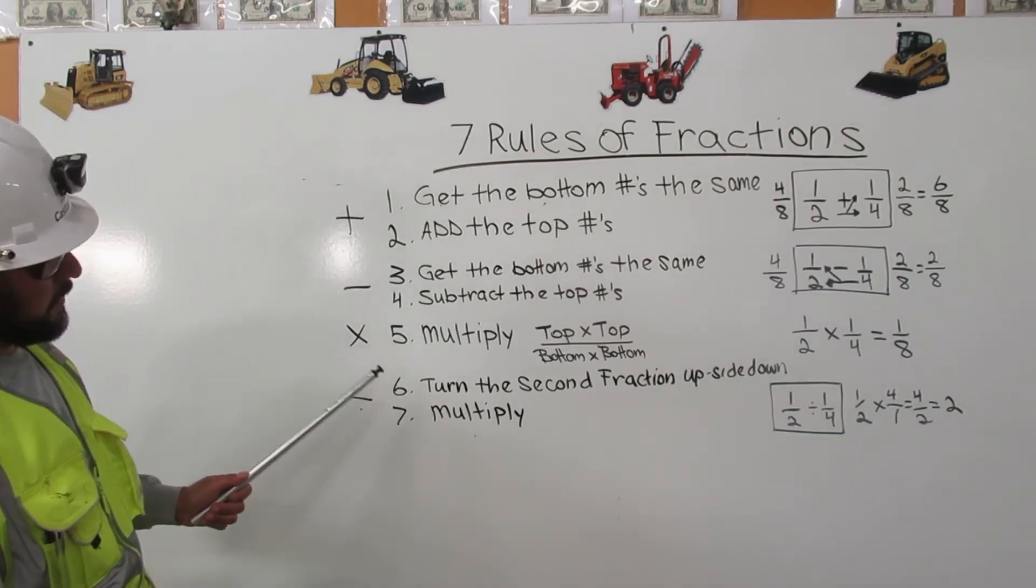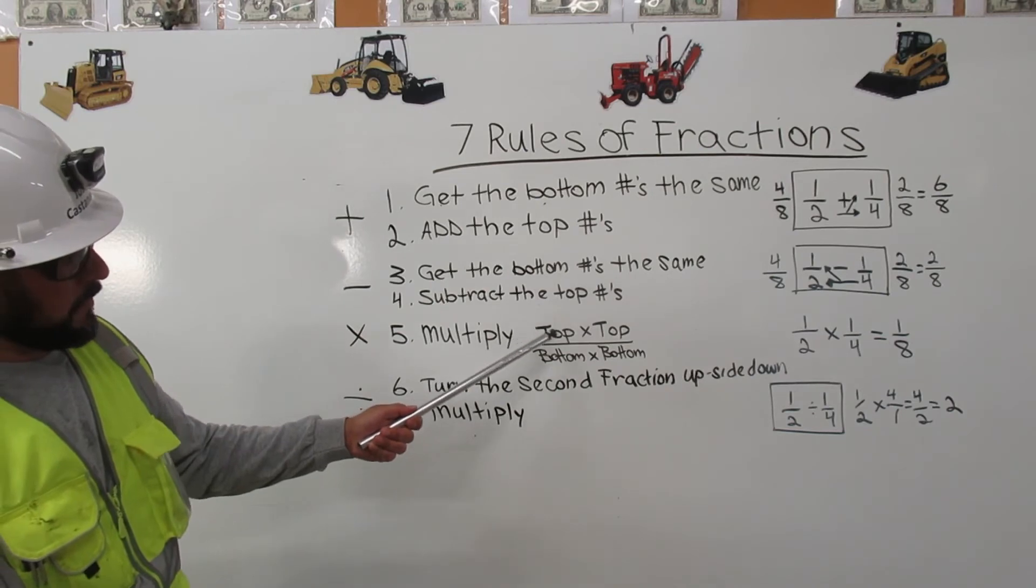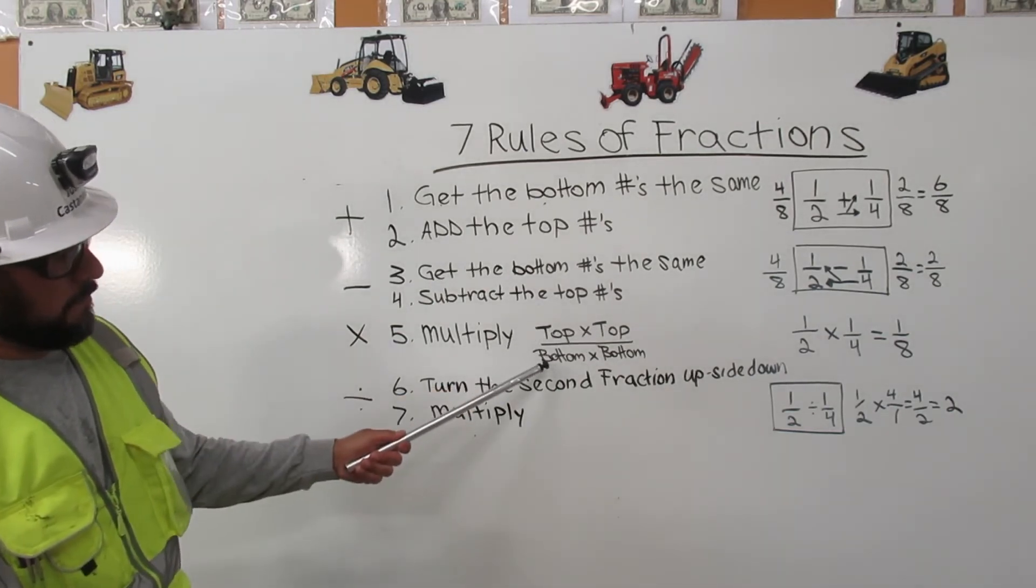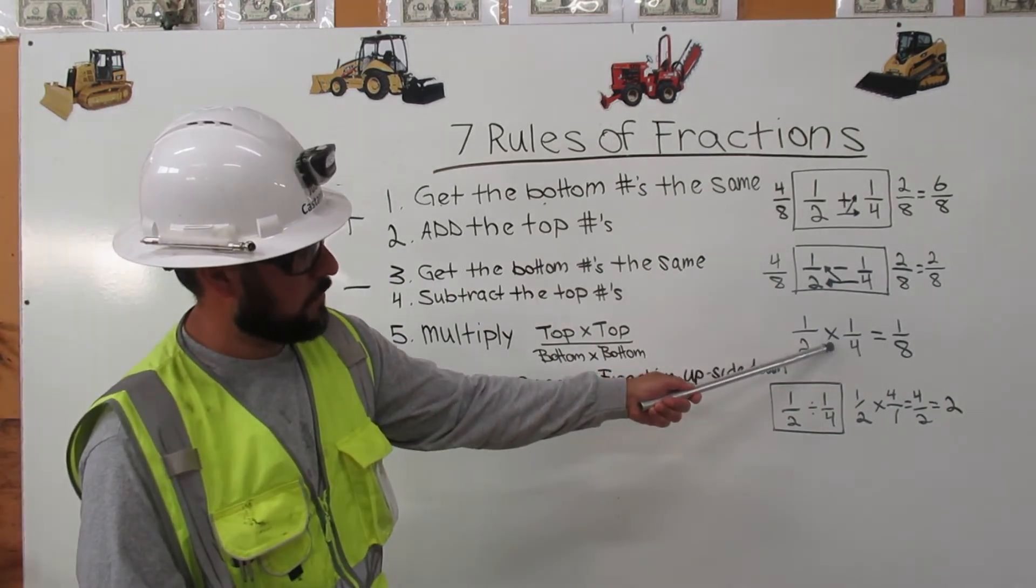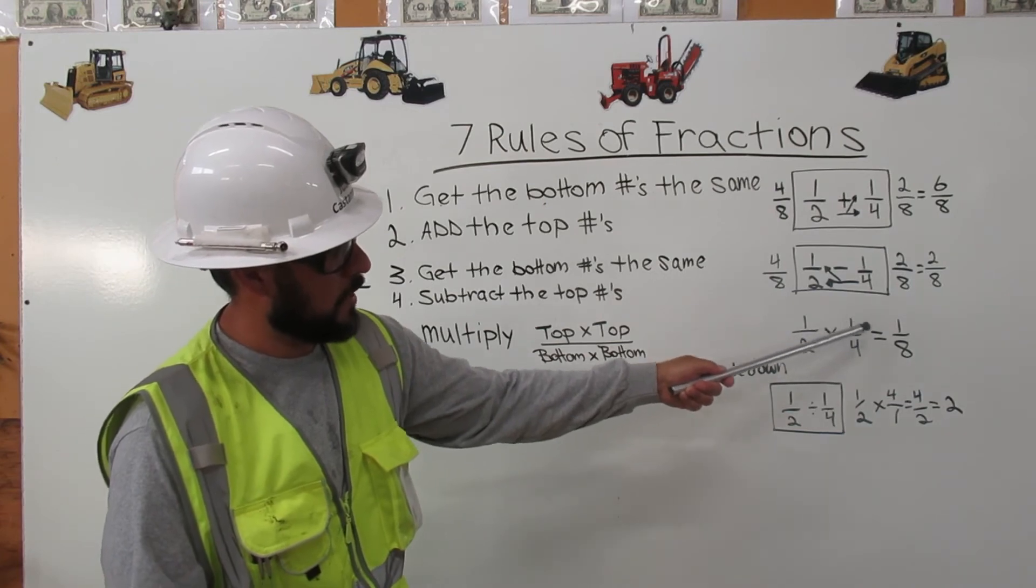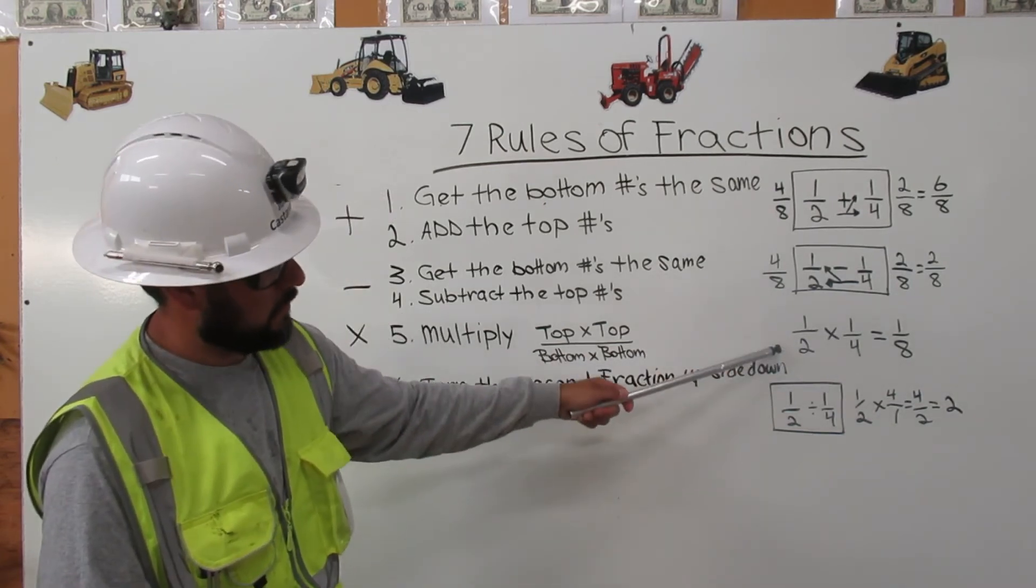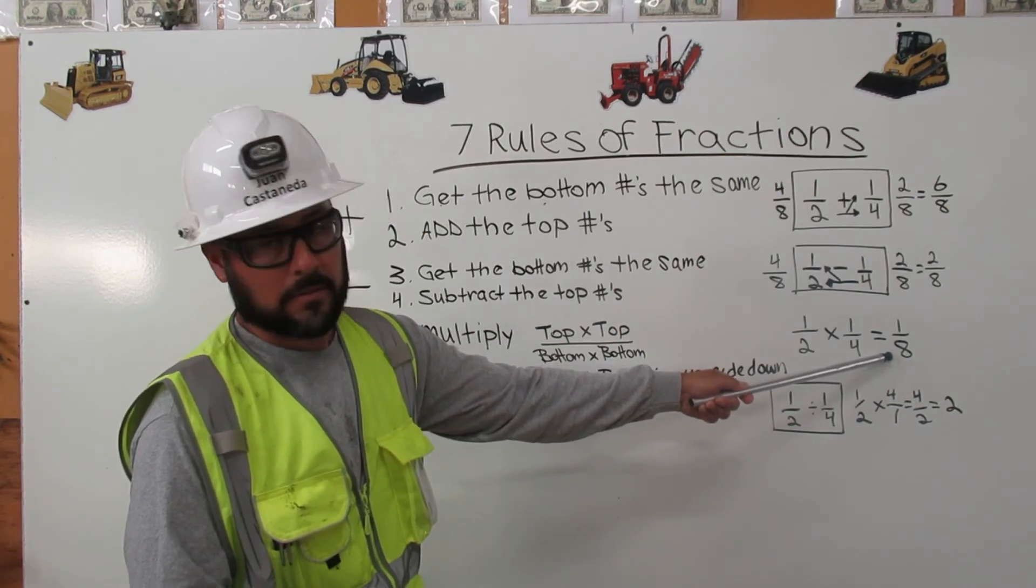Multiplication. Multiply top times top, bottom times bottom. One-half times one-fourth. One times one equals one. Two times four equals eight. One-eighth.